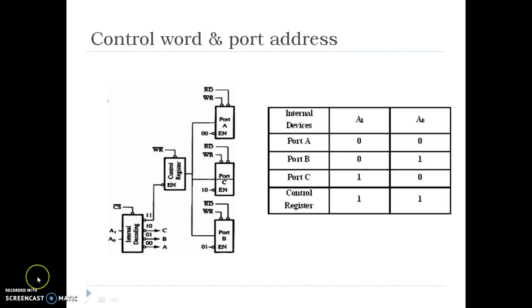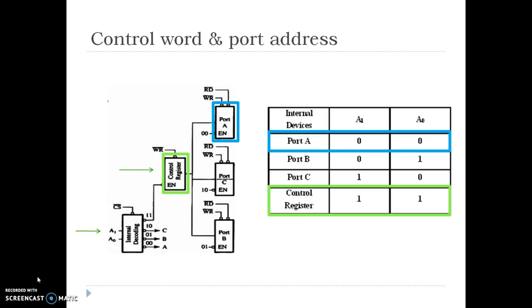The programming of the IC is controlled by the microprocessor by giving a control word. This control word is stored in the read-write control unit in a special register known as the control word register. Using the A1 and A0 lines, a signal is sent to the microprocessor. When the value of A1 and A0 is 11, the control register is selected. Then the write signal is activated and the data is stored into the control word register. If we want to send or receive data from any of the ports, say Port A, then the value of A1 and A0 will become 00, and Port A will be selected and the data will be directly written or read from Port A.